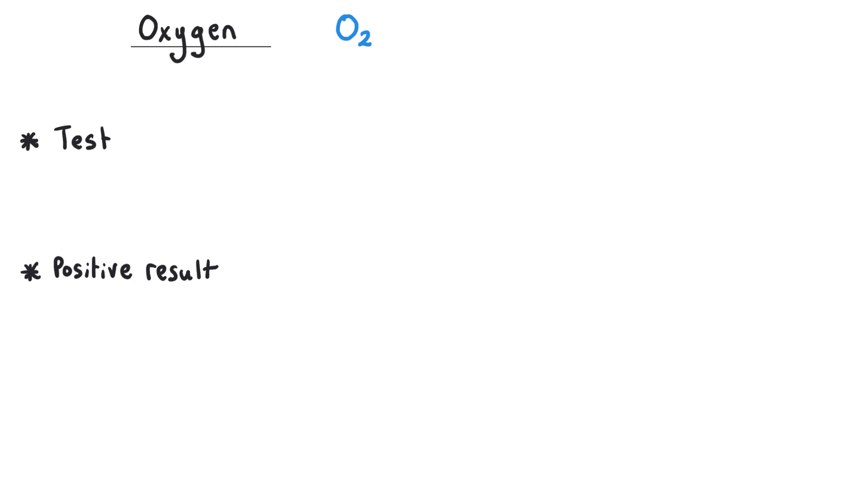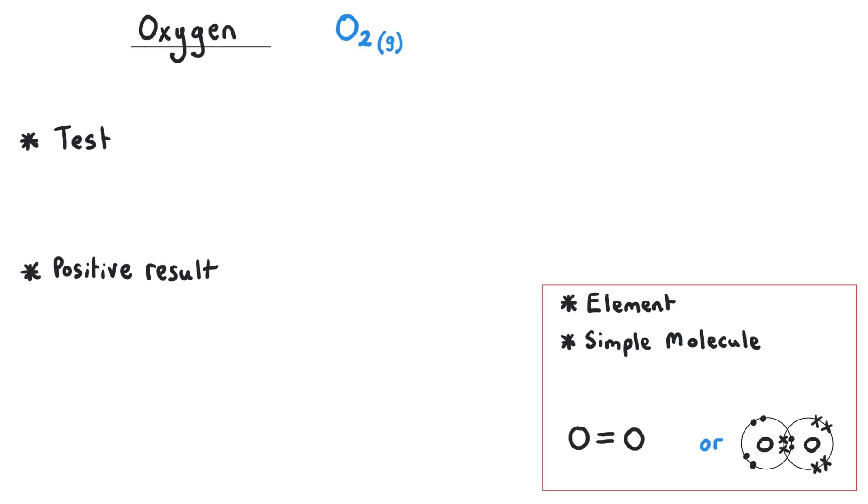Oxygen gas has got the formula O2, and I'm going to put that state symbol g after it again. This tells us that oxygen is also an element because we only have one type of atom, and again it's a diatomic molecule with two oxygens joined together with a covalent bond to make a simple molecule. This time, because oxygen's in group six, it's actually a doubly bonded molecule with a double covalent bond.